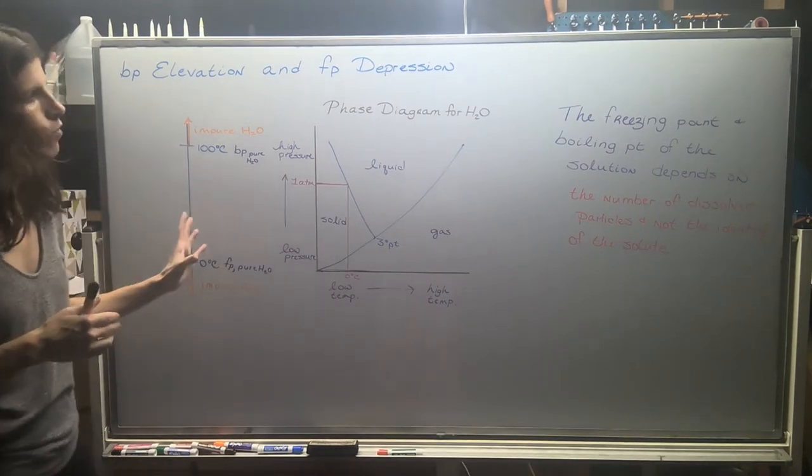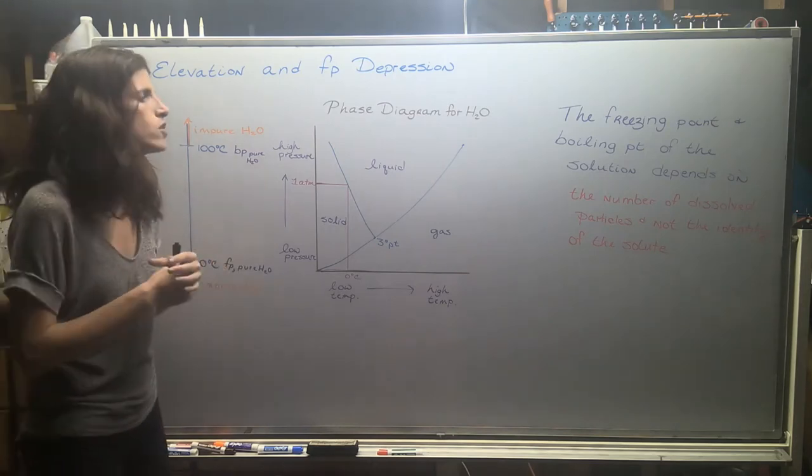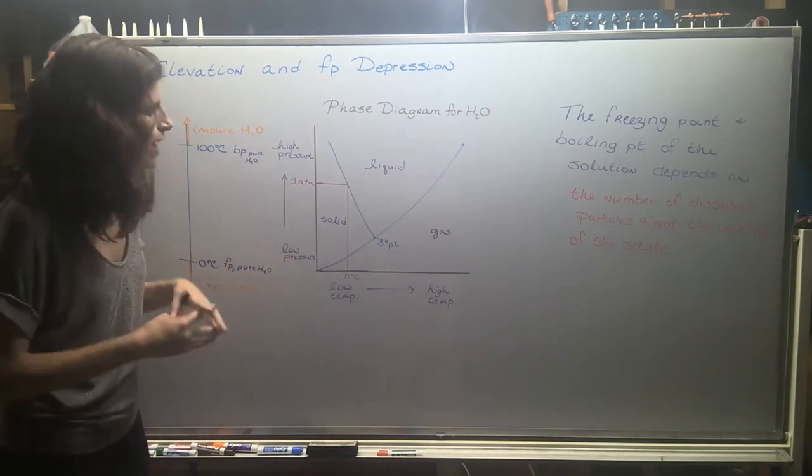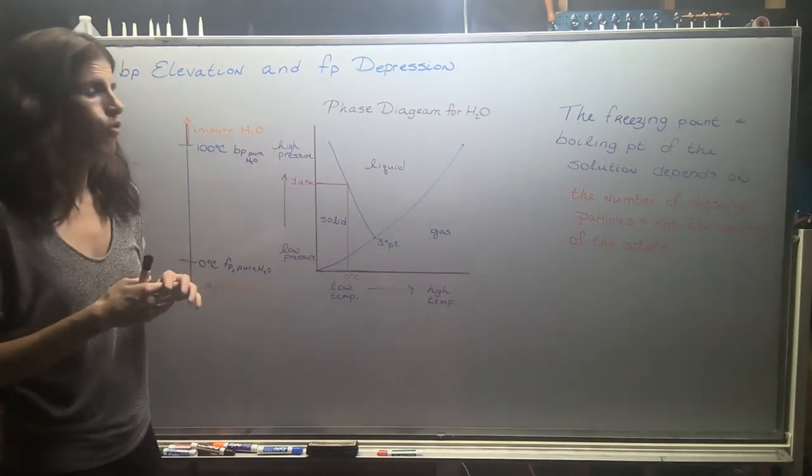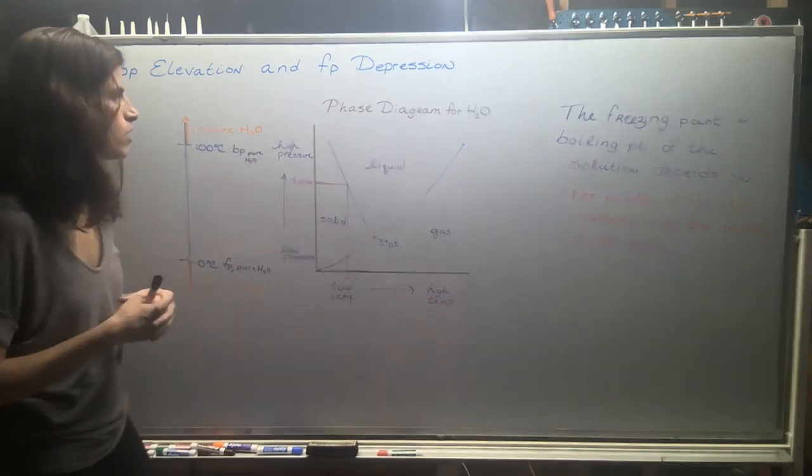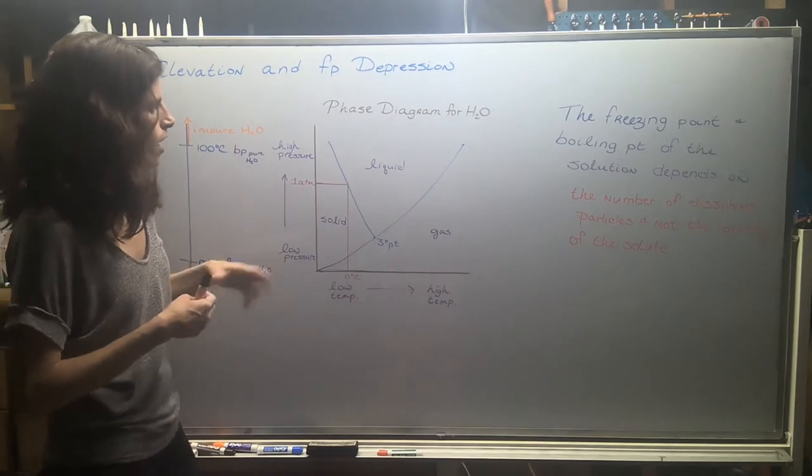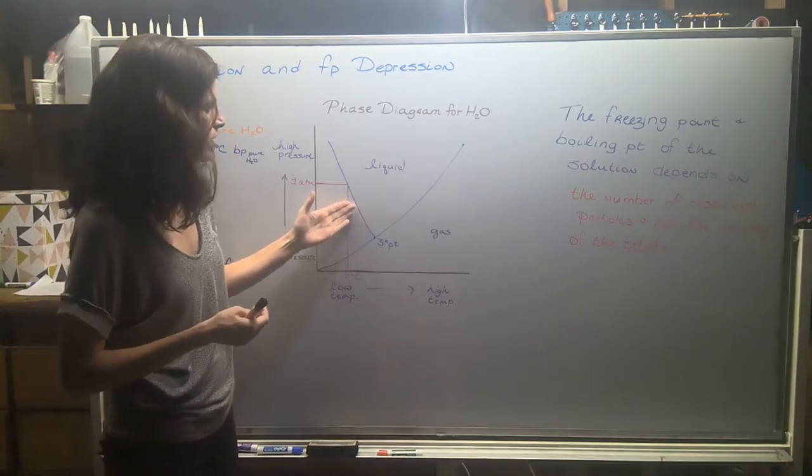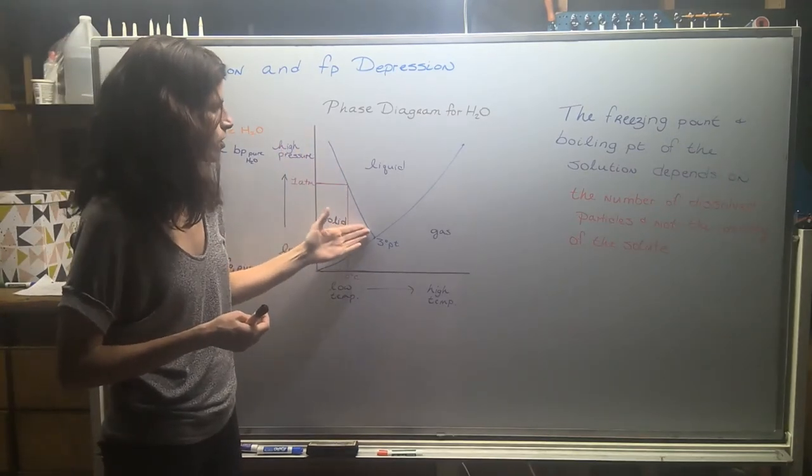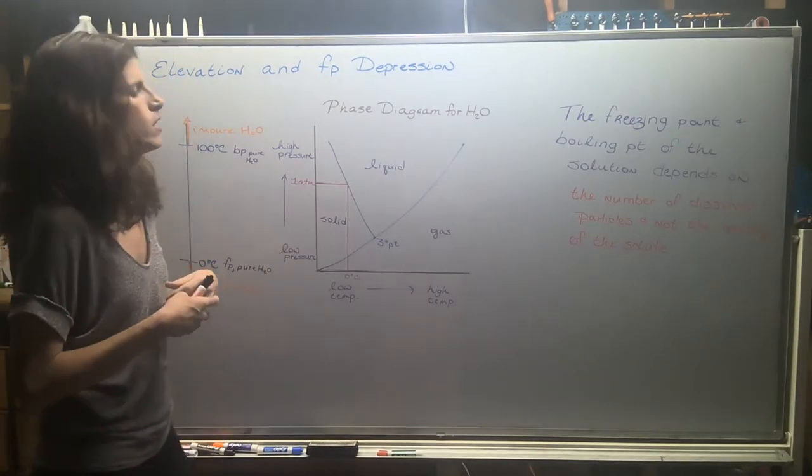Over here, I have what's known as a phase diagram. These are super cool. They look a little bit different for each substance and you can do them for elements as well. This is the phase diagram for water. It has a characteristic negative slope for the solid liquid boundary. That's one of the ways that you'll know it's for water.